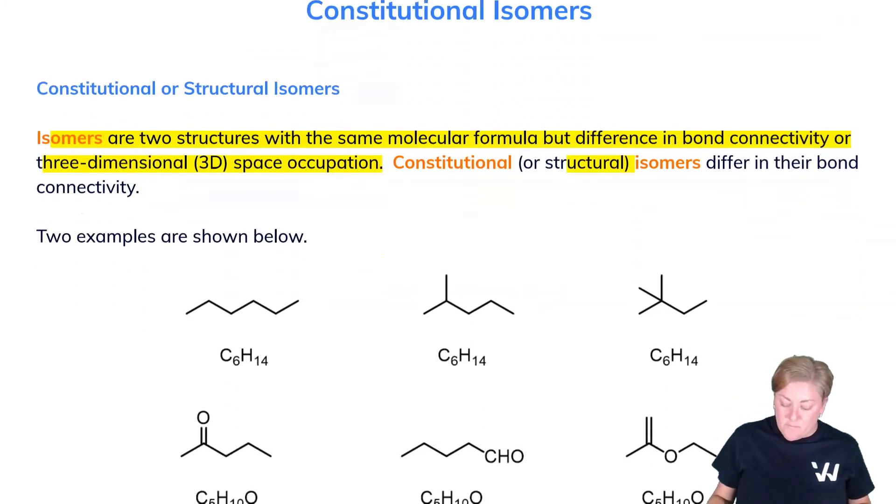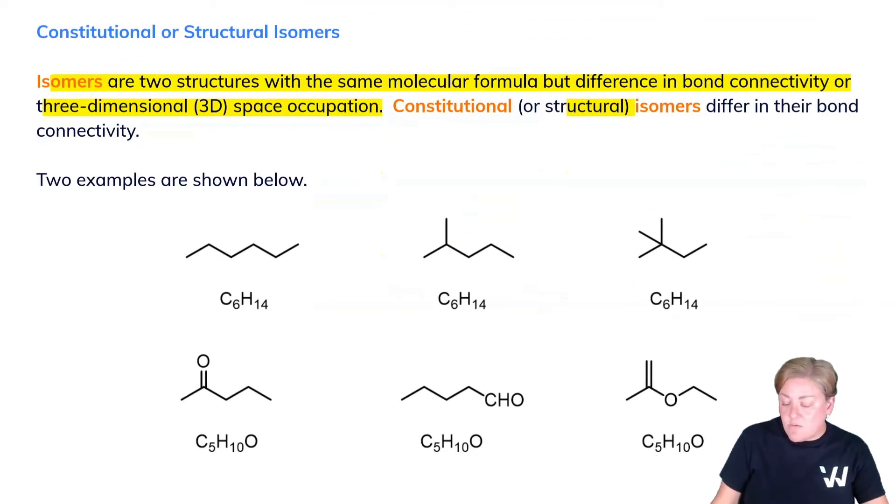You'll notice that we can have versions with just hydrocarbons, with C6H14 being shown a variety of ways. What changes here really is branching, and as you'll remember from our section on intermolecular forces, branching can affect things like melting point and boiling point.